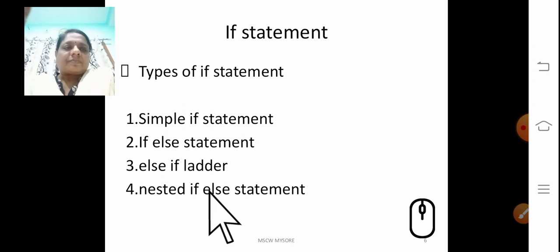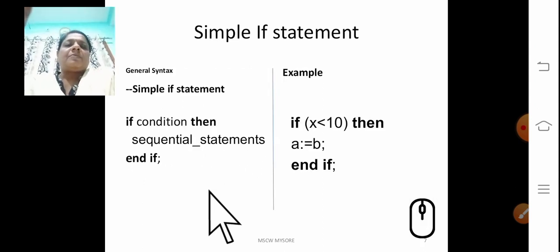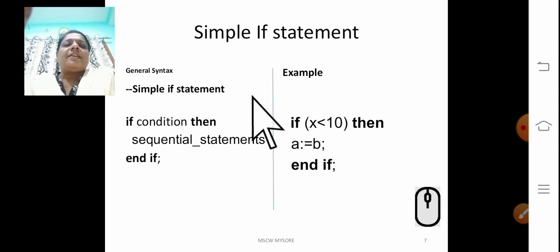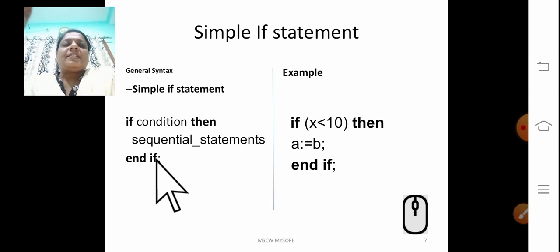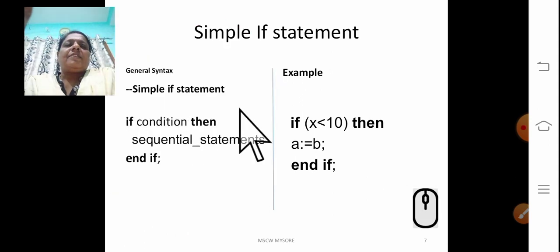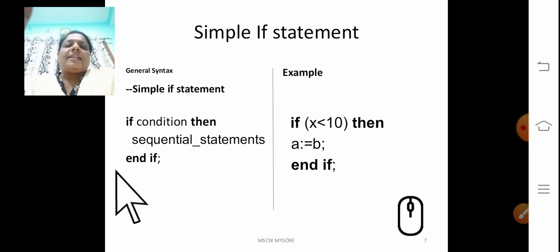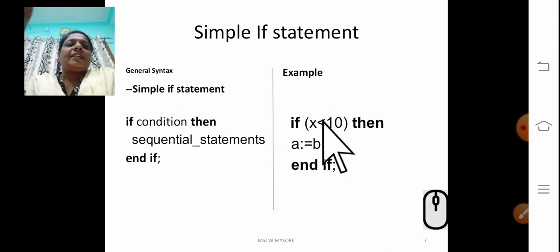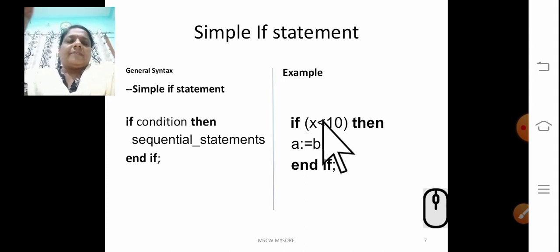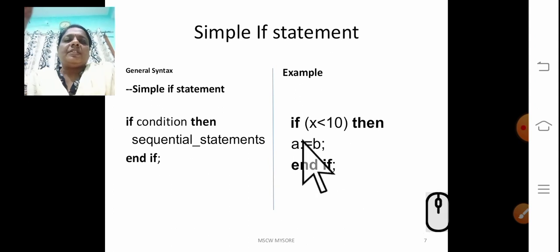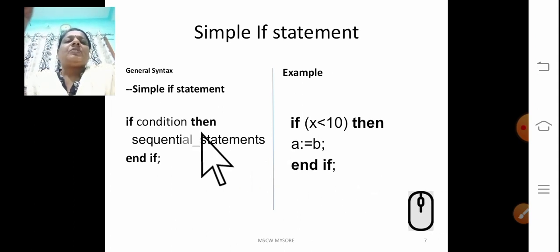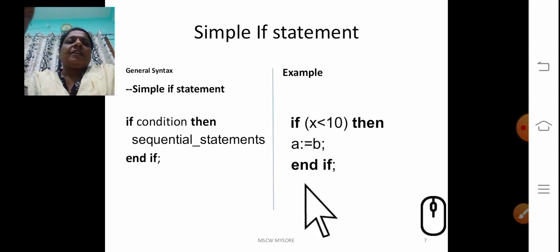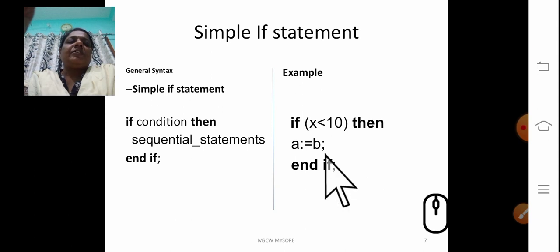In the next slides, on the left side I have written the general syntax and on the right side the example. Here is the general syntax for the simple if. In the simple if: if condition, then sequential statements, and end if. In the same example, if x is greater than 10 — if this condition is true, it is going to execute the variable assignment statement a equal to b, and end if. If this condition is true, it executes and stops the execution of the if statement.